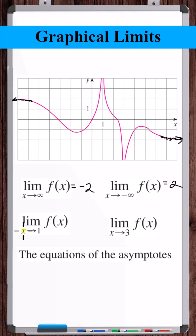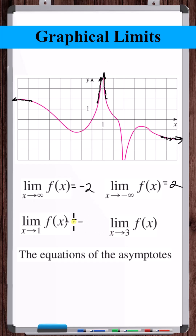The limit as x approaches 1 in general — let's check from the left. As x approaches 1 from the left, the function approaches positive infinity, and from the right, also positive infinity. So this limit is equal to positive infinity.